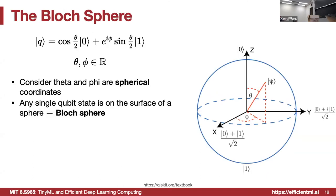The zero and one states correspond to the two poles of the Bloch sphere. For example, when theta equals pi and phi equals zero, we get the one state. This representation is intuitive for single qubits, but it doesn't directly extend to multiple qubits — we cannot simply have a Bloch sphere for multiple qubits.